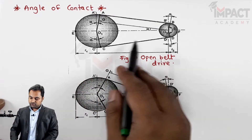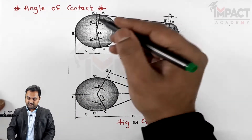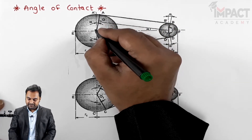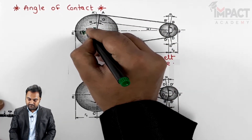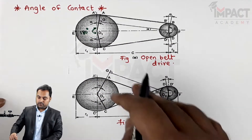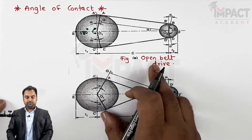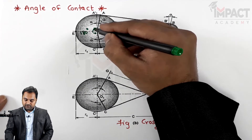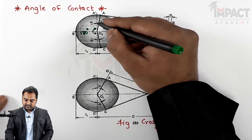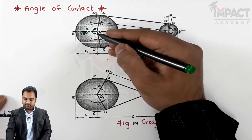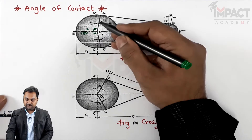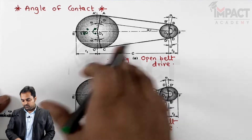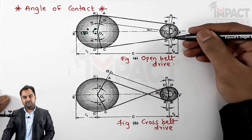In the case of an open belt drive, the vertical line represents 180 degrees or pi radians. For the bigger pulley of the open belt drive, the angle of contact is more than 180 degrees. We can see there is an angle alpha on each side, so the angle of contact for the bigger pulley is 180 degrees plus 2 alpha.